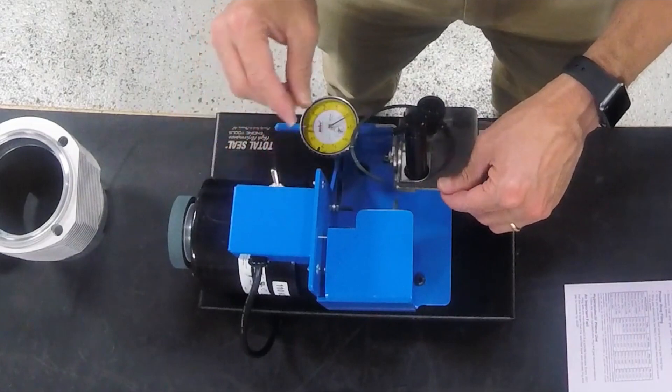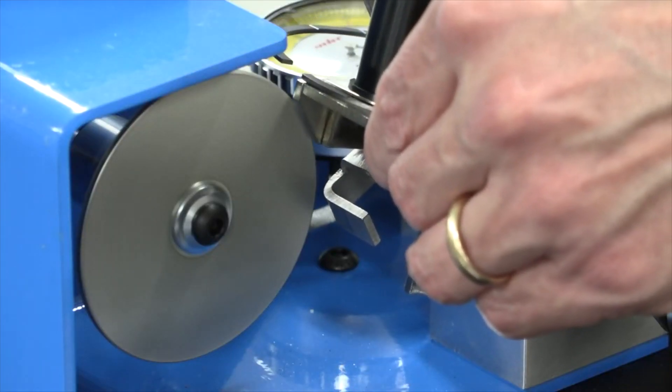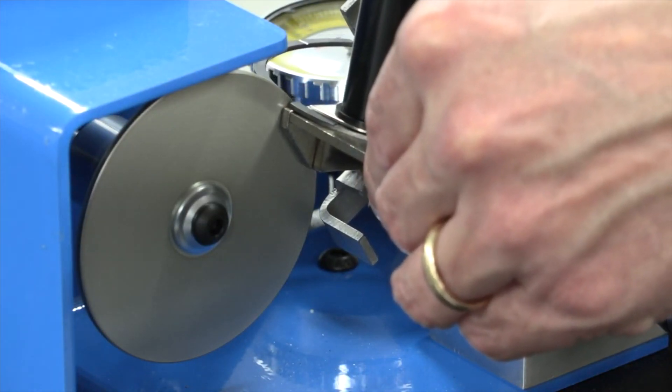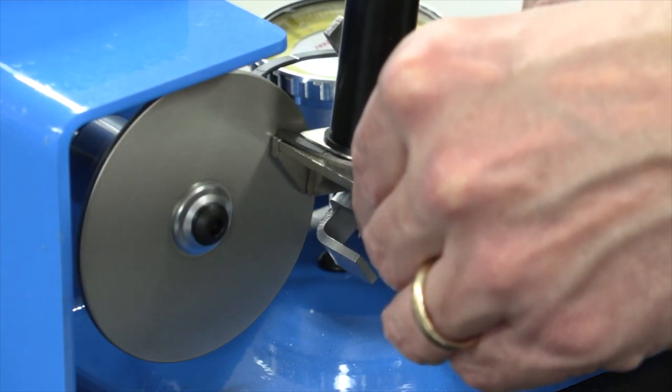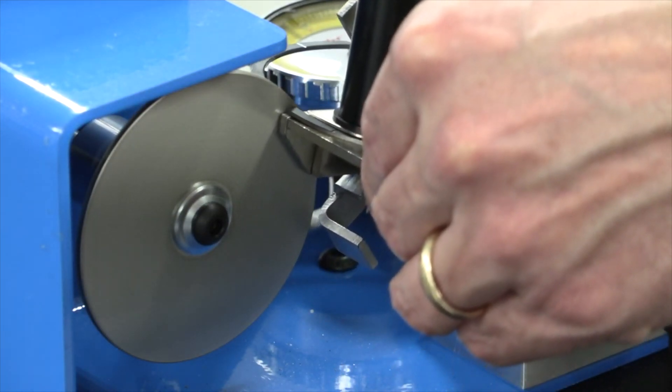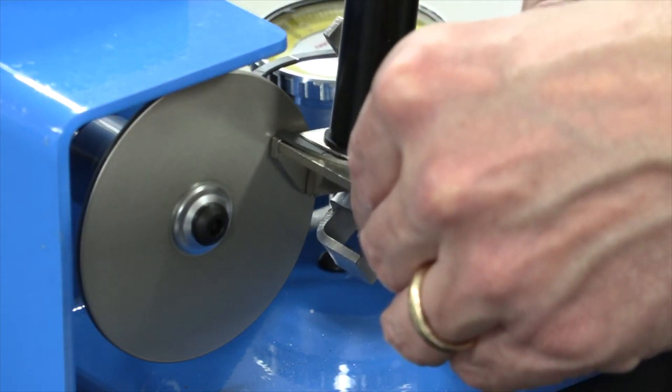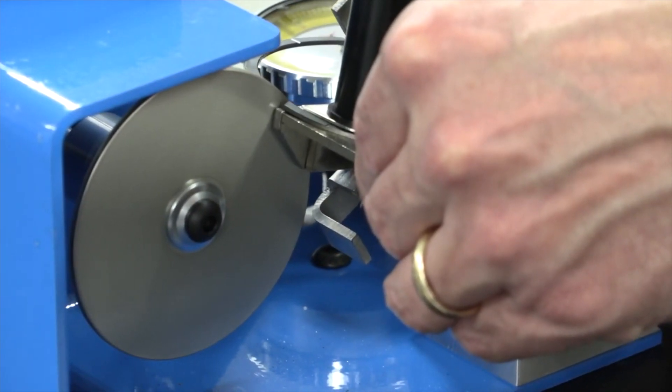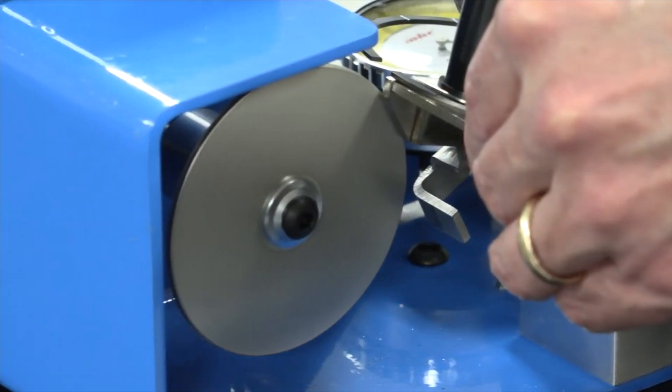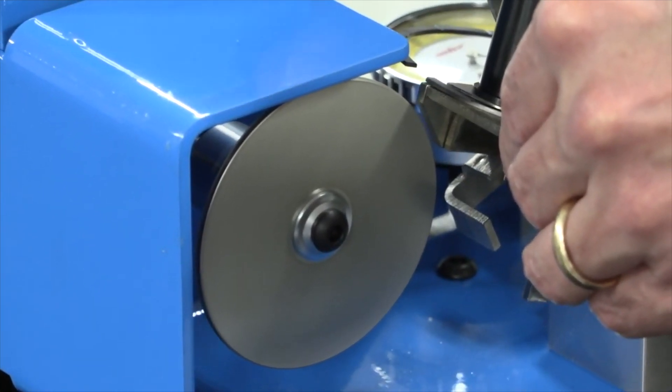I'm going to start the grinding wheel and I'm going to move very slowly, move the ring into the grinding wheel where it cuts that much off. Move it back, move very slowly so you don't grab the ring. And now, as you can see, no sound, no cutting. It's removed right at two thousandths of ring material.